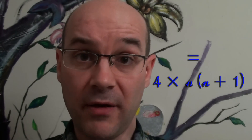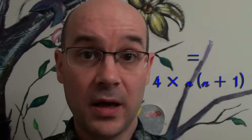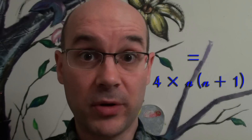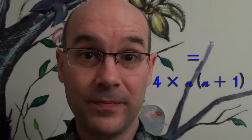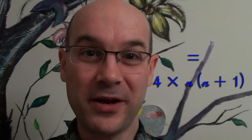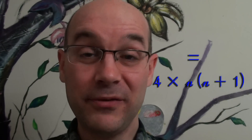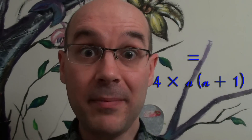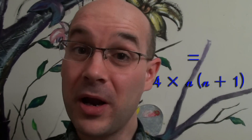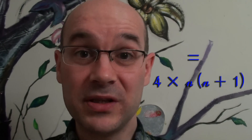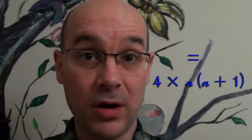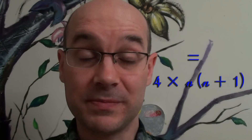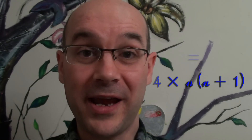But in half of the cases we will have n as an odd number, and that will not work. But here comes the little subtlety: if n is an odd number, then n plus 1 is an even number, and we're back — because an even number multiplied by 4 multiplied by n always makes a multiple of 8.